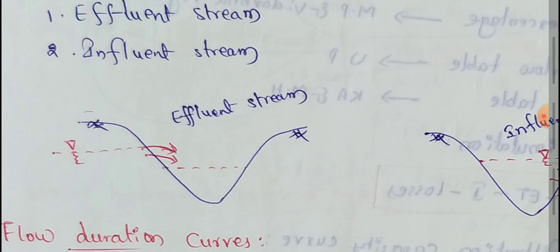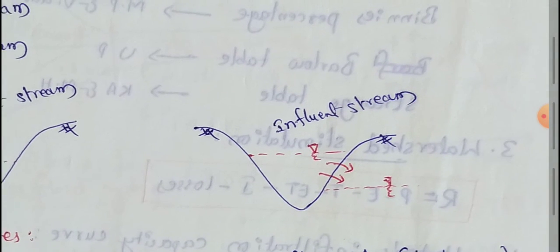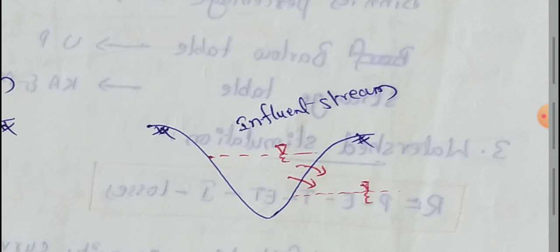Such a stream is called an effluent stream — the groundwater table is above the stream, so water feeds into the stream. For an influent stream, the stream contributes flow to groundwater. When the groundwater table is below the stream bed, seepage takes place from the stream into the ground. Such a stream is called an influent stream.